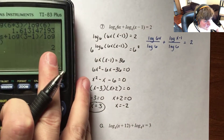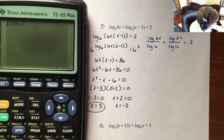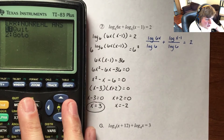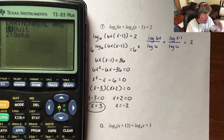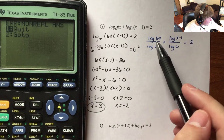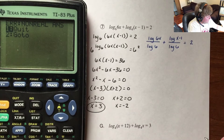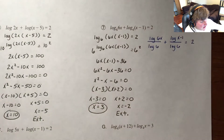Now I have to do the same thing for x equals negative 2. I'm going to go log base 10 of 6 times negative 2 divided by log base 10 of 6. Right away, just in that first expression, we're not going to get a real answer — we get some imaginary unit. This tells me that negative 2 is extraneous. If the first part gives a non-real answer, there's no way the total can equal 2.